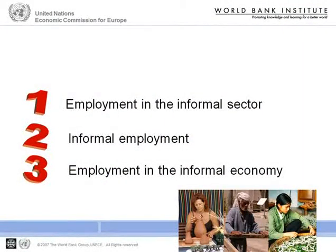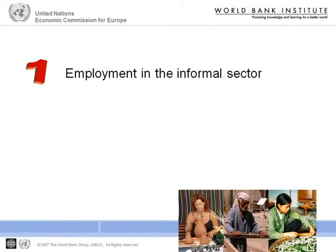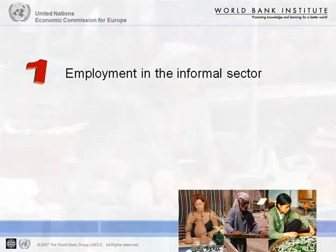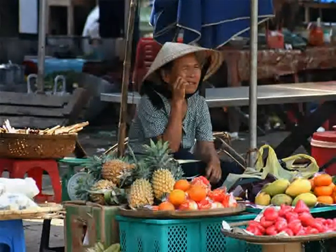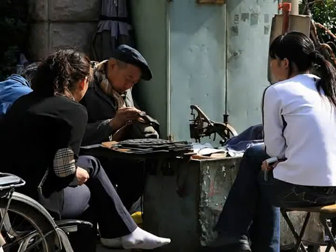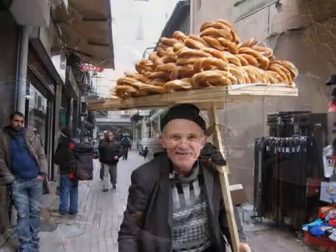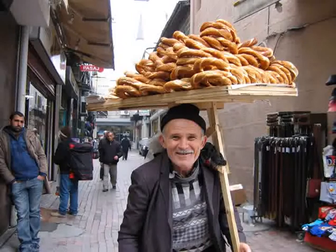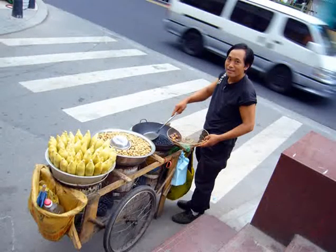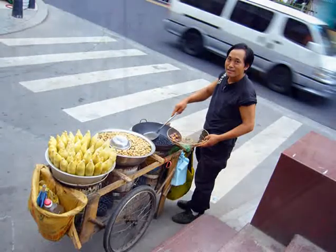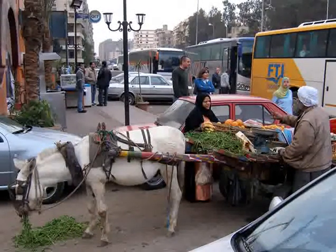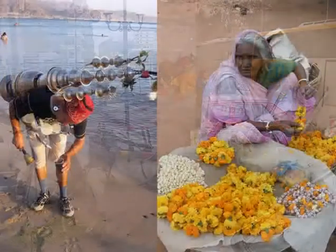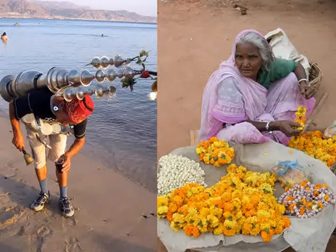In 1993, the 15th International Conference of Labor Statisticians adopted an international statistical definition of employment in the informal sector, which was based on the characteristics of the production units, or enterprises, in which the activity takes place. The standard definition includes all persons employed in at least one informal sector enterprise. Informal sector enterprises are defined as enterprises owned by individuals or households, not constituted as separate legal entities independently of their owners, and for which no complete accounts are available. Their size in terms of employment is small — less than five employees was later recommended for international reporting — and they are not registered under national legislation. Such enterprises are engaged in non-agricultural activities; examples include self-employed street vendors and home-based workers.